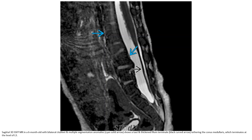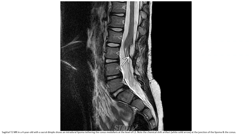Case 1: A 6-year-old with bilateral clubfoot and multiple segmentation anomaly. Sagittal T2 MRI shows terminal tethering of the conus medullaris, which terminates at the level of L3. Case 2: T2 MRI in a four-year-old with a sacral dimple, showing an intramedullary and intraneural lipoma tethering the conus medullaris at the level of L3.